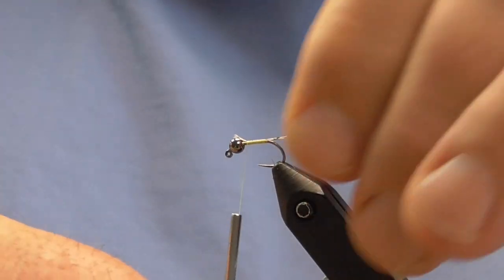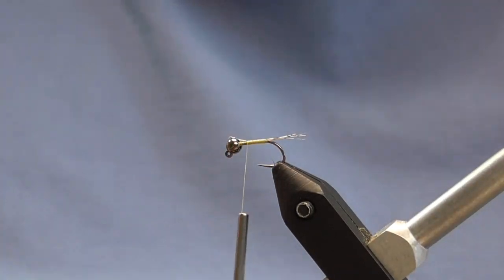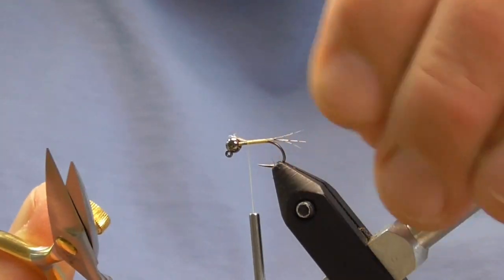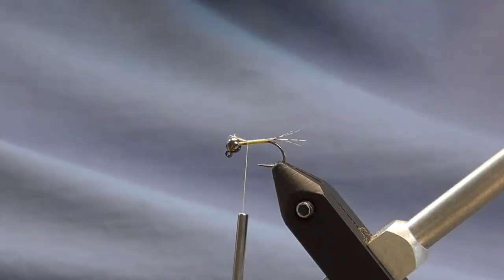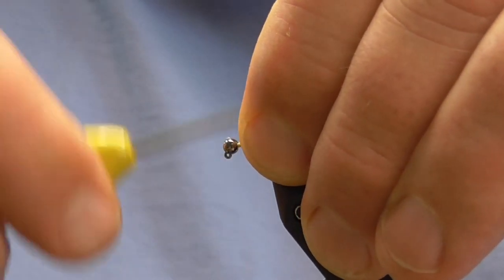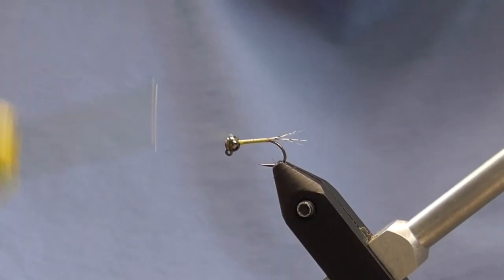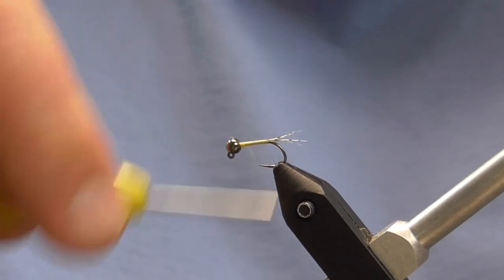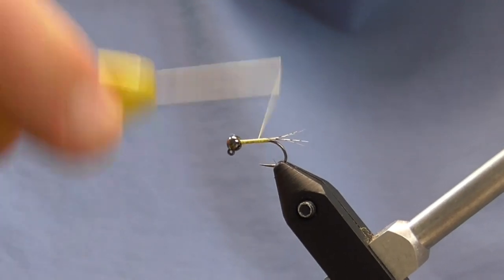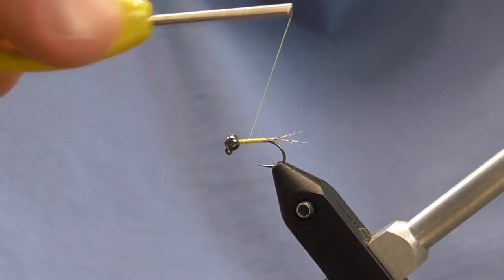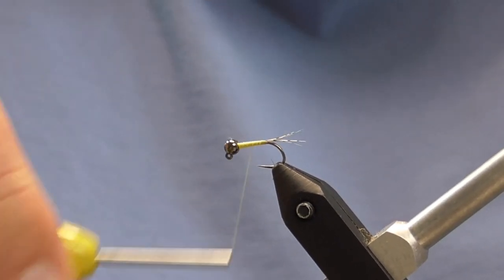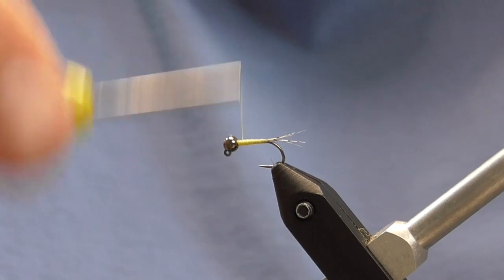I'll tie that in securely and start wrapping up, and then trim off any of the excess. Actually, I think I might be able to just wrap that straight down. We're going to build a tapered body with our thread at this point, so if you want to cut it off short, you can do that, knowing that you're going to be covering things up and evening things out with thread.